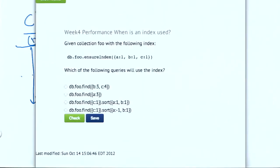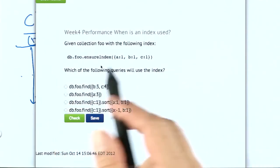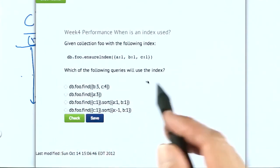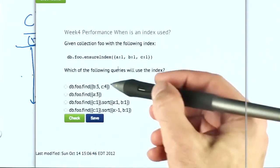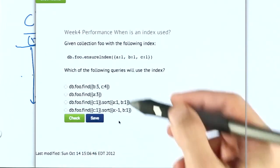Okay, let's do a quick quiz. This should be kind of a review for you. Given the collection foo with the following index A, B, and C, which of the following queries will use the index? You can see the four choices here. Check all that apply.